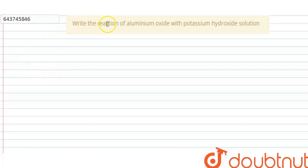The question says: write the reaction of aluminium oxide with potassium hydroxide solution. So the reaction is aluminium oxide